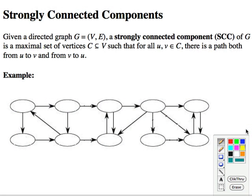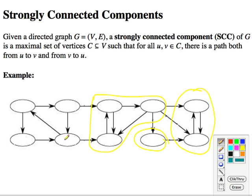A strongly connected component is a maximal set of vertices in the graph such that, for all pairs of vertices in that component, there's a path in both directions — both from U to V and V to U. You can get from every vertex in the component to every other one, respecting the direction of the links. Weakly connected components are when you ignore the direction. This graph here is completely weakly connected — just one component — but it has several strongly connected components: some vertices can reach each other but you can't get out, one vertex has no mutual relationships and is alone, and a larger set where you can get anywhere via some path.